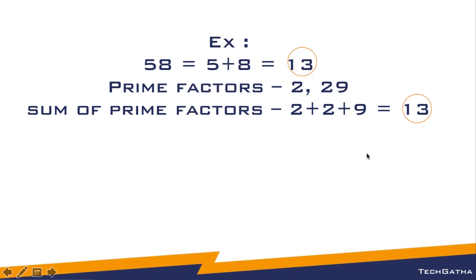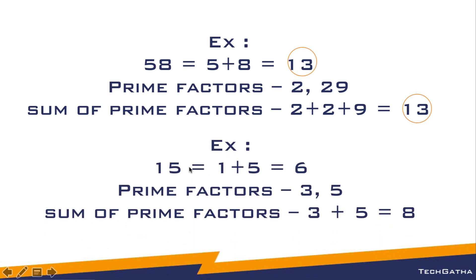If both sums are equal, it is a Smith number. For example, take the number 15: 1 plus 5 is 6. The prime factors are 3 and 5, and 3 plus 5 is 8. Since 8 and 6 are not equal, 15 is not a Smith number.